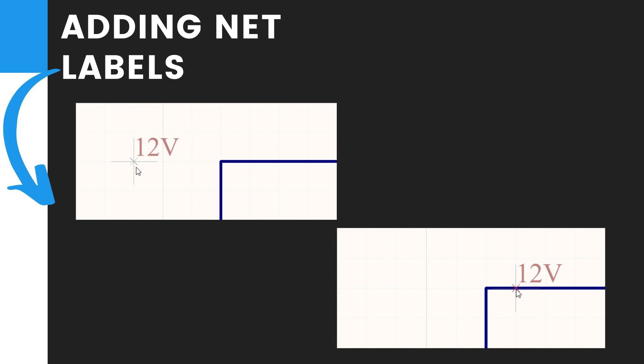Seventh, place the Net Label so that the bottom left of the Net Label touches the lowermost wire on the schematic, just as shown in this image. Then right-click or press Escape to exit the Net Label placement mode.